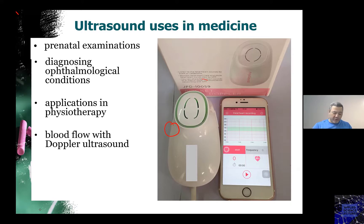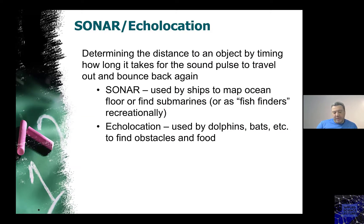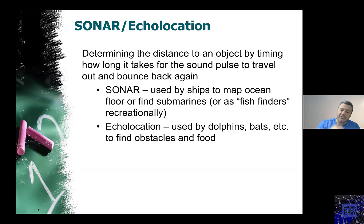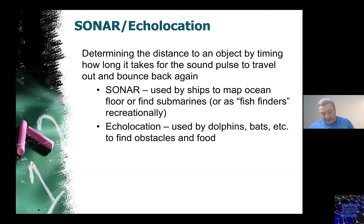Sonar and echolocation rely on generating a sound signal, transmitting it, and then measuring the reflected signal from an obstacle. From the time it takes for the signal to come back, you can measure the distance to the obstacle. This technology has been used in sonar to map the floors of the oceans and to find submarines and fish. Echolocation also exists naturally in dolphins and bats — it is a natural technology that allows those animals to determine the location of their targets.